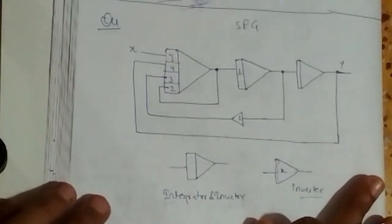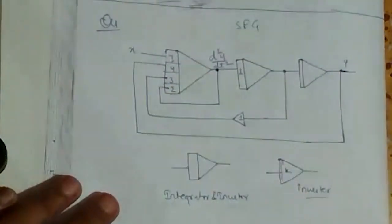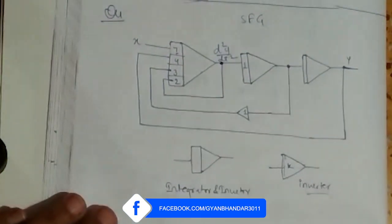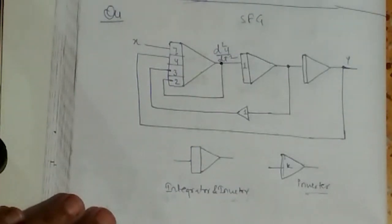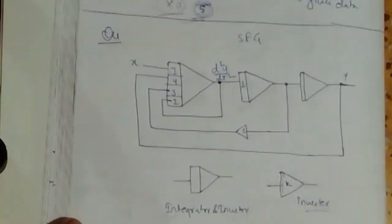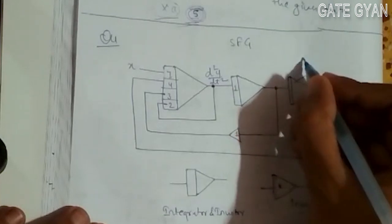This is d²y/dt² given in the question. So to draw its SFG, I will convert each term into its Laplace. The inverter and integrator will be represented in the signal flow graph.